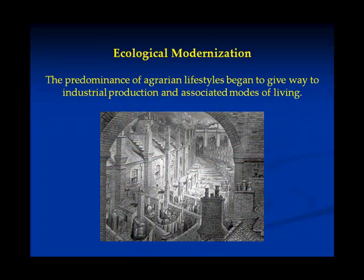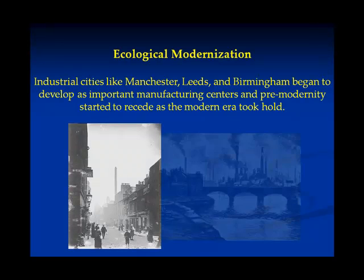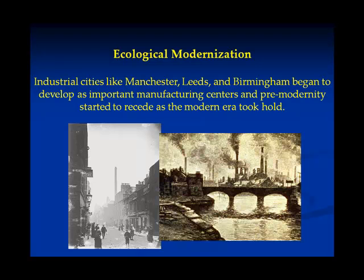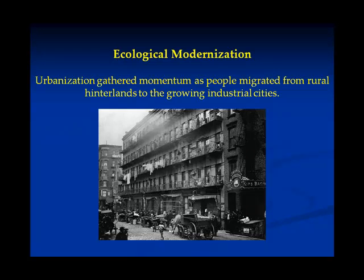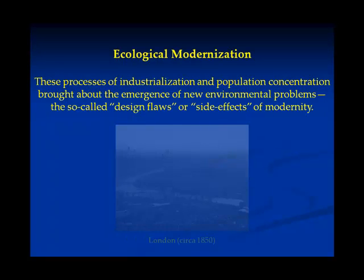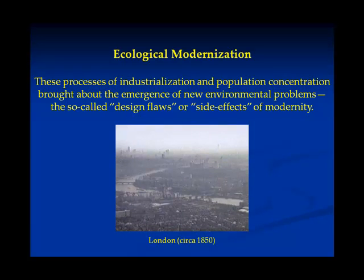The prominence of agrarian lifestyles began to give way to industrial production and associated modes of living. Industrial cities like Manchester, Leeds, and Birmingham began to develop as important manufacturing centers, and pre-modernity started to recede as the modern era took hold. Urbanization gathered momentum as people migrated from rural hinterlands to the growing industrial cities. These processes of industrialization and population concentration brought about the emergence of new environmental problems — what we can construe as the so-called design flaws or side effects of modernity.